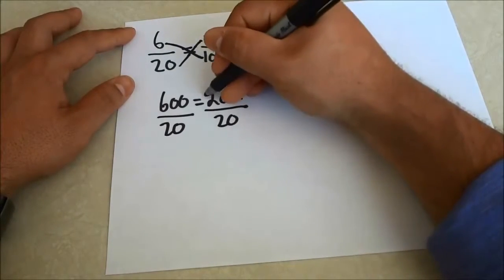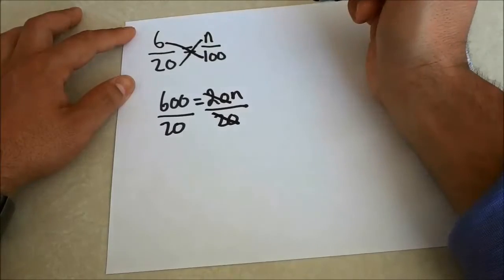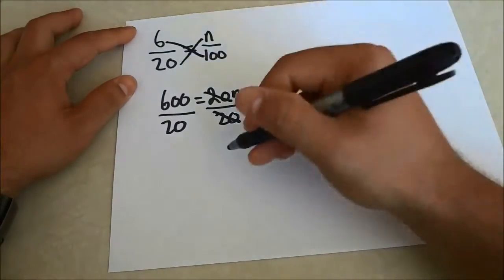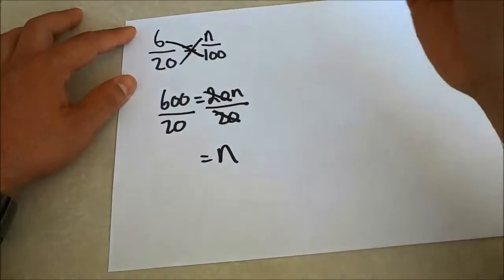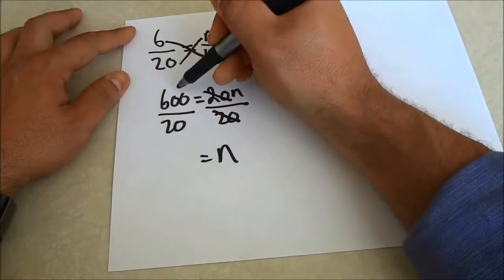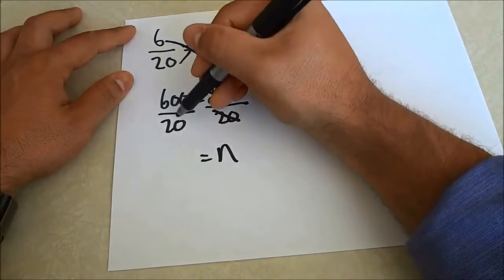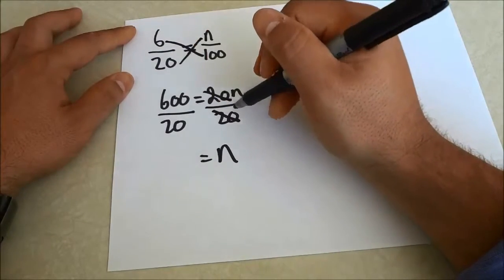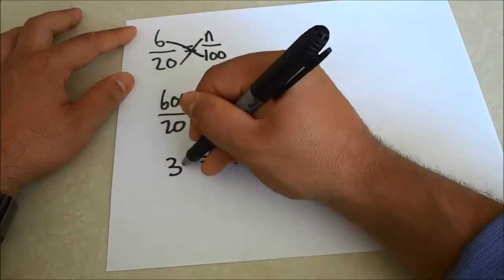So basically the 20 and the 20 here cancel each other out and we are left with n. Now 600 divided by 20 is 30 as you can see right there.